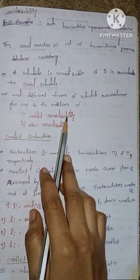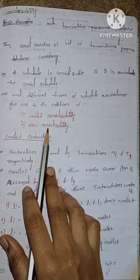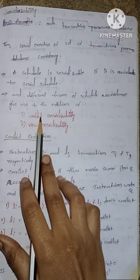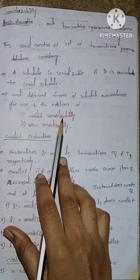The first one is conflict serializability and the second one is view serializability. The first thing to discuss is conflict serializability.